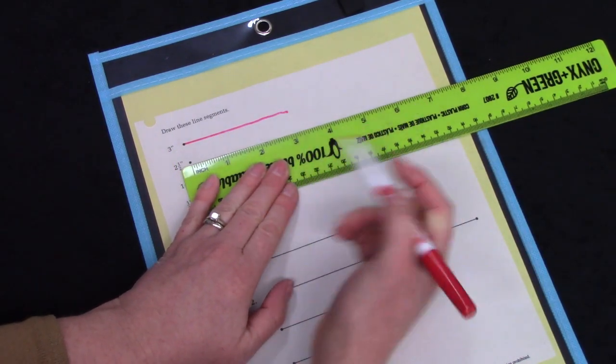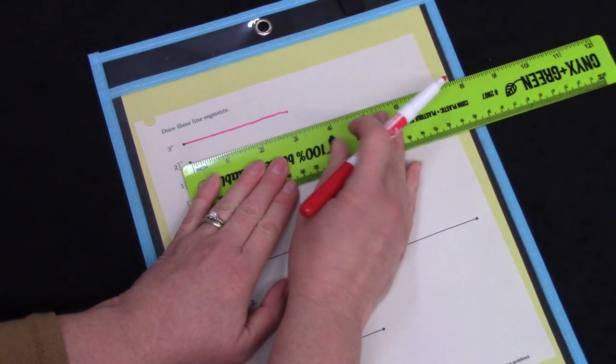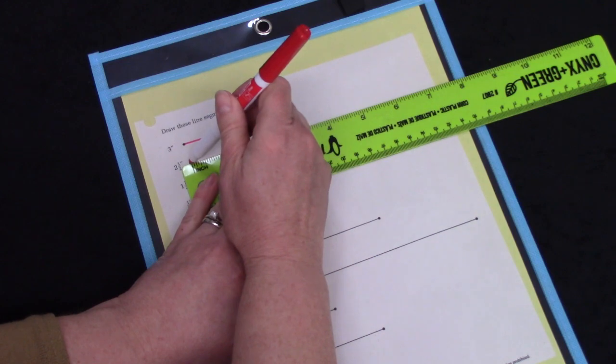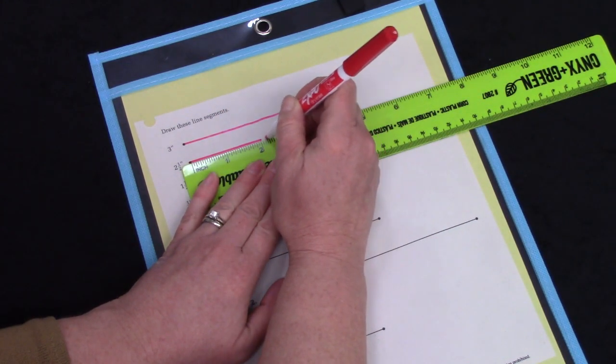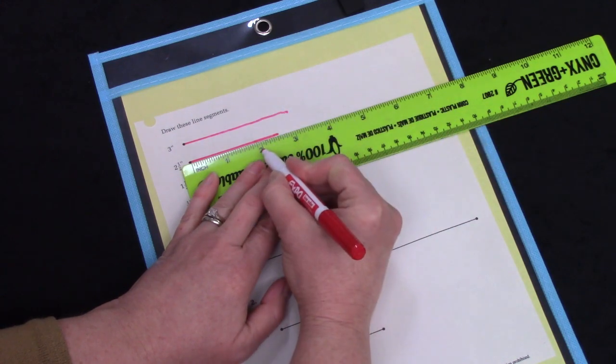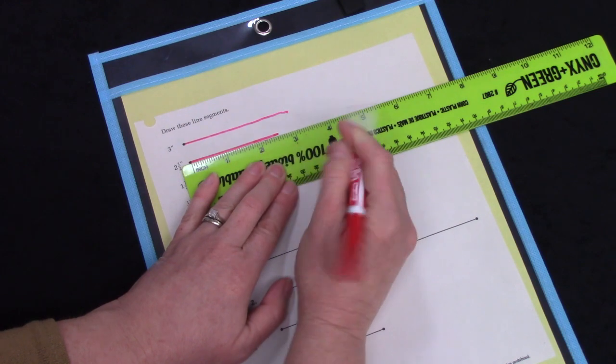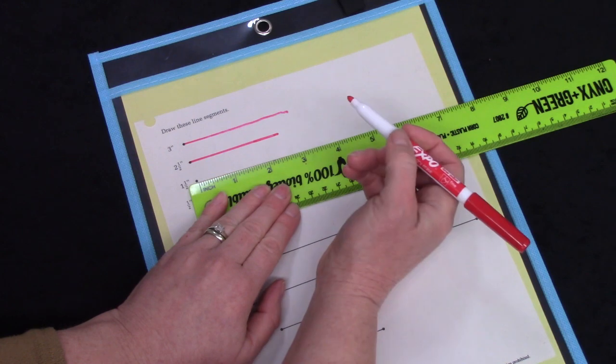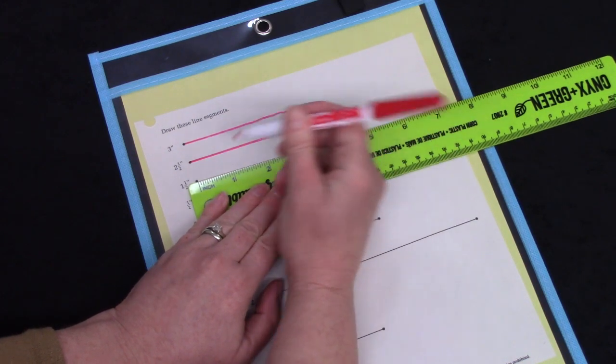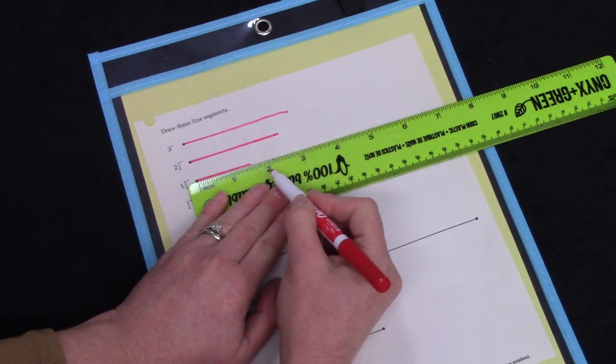Well this one is going to be shorter because it is asking for a line to be two and a half inches long. So I'm going to do two but my one half is right in the middle between the two and the three. That is two and a half. Well this is asking us to draw a one and a half inches. So I'm going to start here at the zero and go one and then halfway between the one and the two. That would be one and a half.